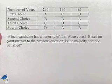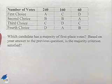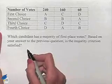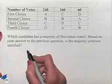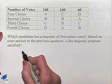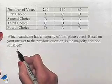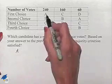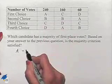And then based on the answer to the previous problem, is the majority criterion satisfied? Let's begin by figuring out the most number of first place votes. We're going to end up just looking at candidate A. Notice has 240 first place votes.